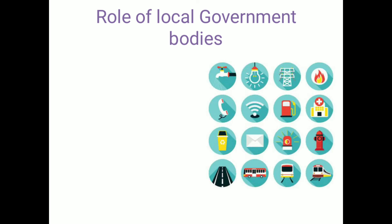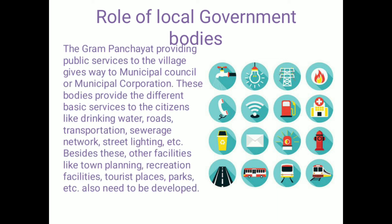What is the role of local government bodies? We need support from the government. As you can see in the picture, they help in providing sanitation, electricity, and other facilities. The Gram Panchayat providing public services to the village gives way to a municipal council or municipal corporation. These bodies provide different basic services to citizens like drinking water, roads, transportation, sewerage network, street lighting, etc. Besides this, other facilities like town planning, recreation, tourist places, and parks need to be developed. Consequently the village transforms into a town and then a city.